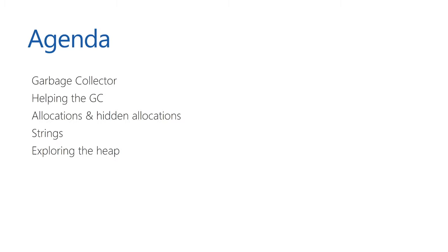The agenda for today: for those who don't know about the garbage collector or have a vague notion of what it does, we'll quickly go over what it does. Then we'll dive into how we can help the garbage collector when writing software. We'll also look at allocating and deallocating memory, hidden allocations, strings — which is quite an interesting data type in .NET — and then explore the heap using CLRMD, a library where we can query whatever is in memory.